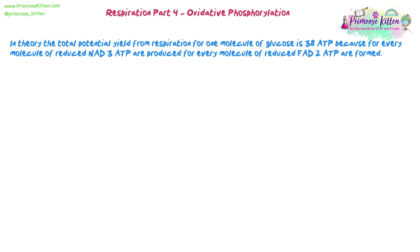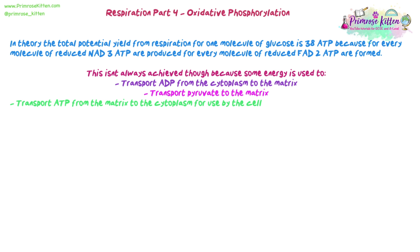In theory, the total potential yield from respiration for one molecule of glucose would be 38 ATP, because for every reduced NAD that arrives at the electron transport chain, three ATP would be produced through ATP synthase — due to how many hydrogen ions it can pump based on the energy released from its electrons. Because FAD arrives further along the electron transport chain, less energy is released, fewer hydrogen ions are pumped, and so less ATP is produced per FAD. This says 'in theory' because it's not always achieved — it's not 100% efficient.